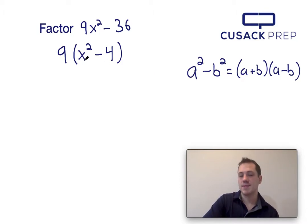So if a² is in the same position as x², and b² and 4 are in the same position, I know that a must be x, and b must be 2 by taking the square root.